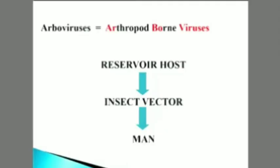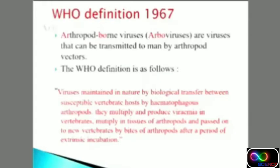In general, if a virus has a reservoir host, it means a particular host harbors the virus causing the disease. From this host, the virus is transmitted to the human being by an insect vector, that is an arthropod vector. The WHO definition states that arboviruses are viruses which can be transmitted to humans by arthropod vectors and are maintained in nature by biological transfer between susceptible vertebrate hosts by hematophagous arthropods.